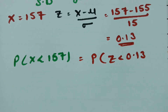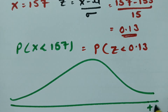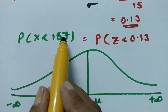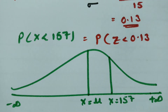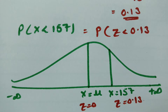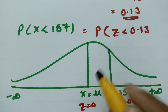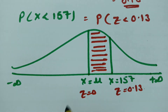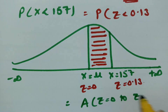If I draw the figure here: this is the normal curve, with plus infinity on one side and minus infinity on the other. The center is x equal to mu, and when x is equal to 157, in terms of z, that is z equal to 0 at the center and z equal to 0.13. The area under z less than 0.13 — this shaded region — is the required area, covering from z equal to 0 to z equal to 0.13.